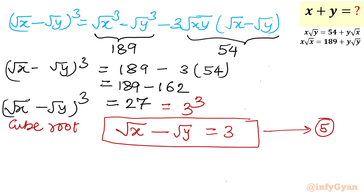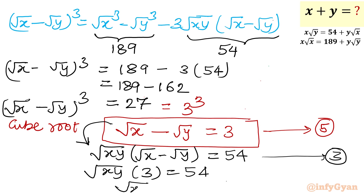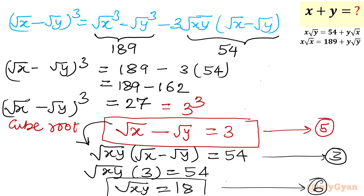Now substituting the value √x − √y = 3 (equation 5) into equation 3, which was √(xy)·(√x − √y) = 54, we get √(xy) · 3 = 54, therefore √(xy) = 18. This value will be required to calculate x + y.